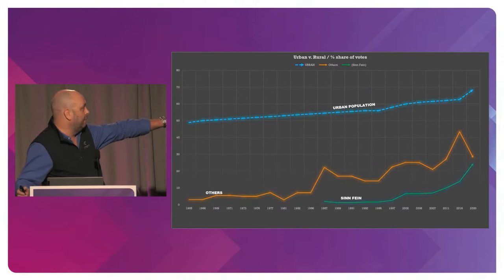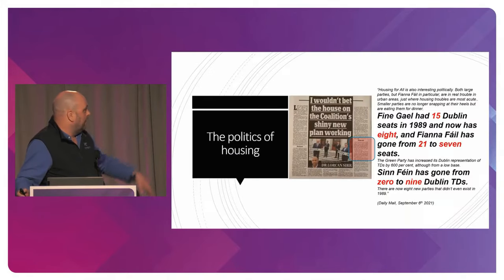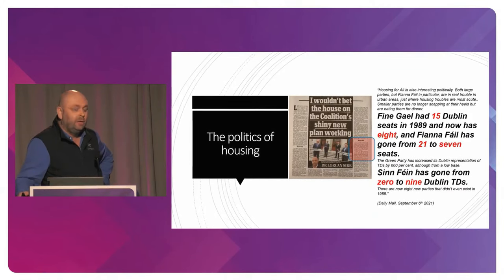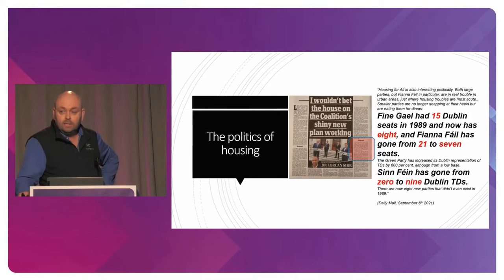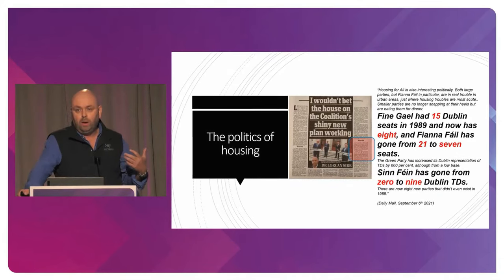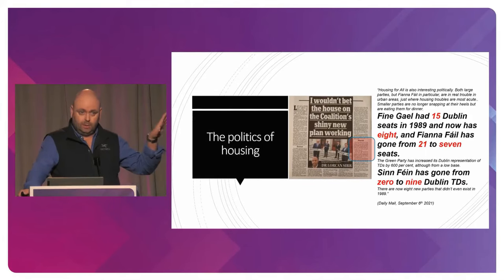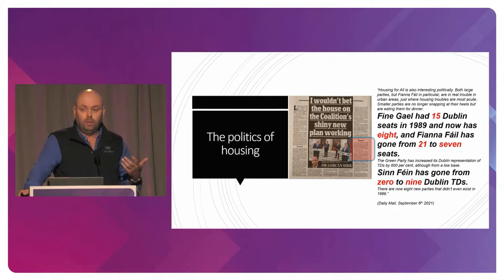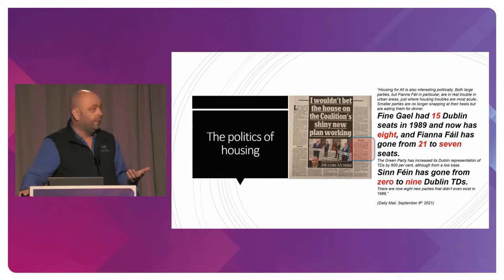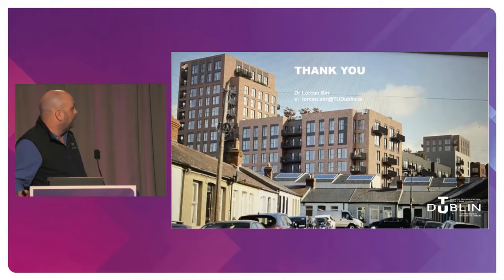You guys know this much better than me — I'm not really politically attuned at all. In 1989, Fine Gael had 15 seats and now it's 8. Fianna Fáil had 21 and now it's 7. The Greens have gone from 0 to about 6, and Sinn Féin has gone from 0 to 9 TDs. That's very much about how where we live affects us on the ground. Some of the smaller parties are very good on the doors and very good locally. You have to be responsive between elections — not just appear when you're looking for a vote. Thanks very much.